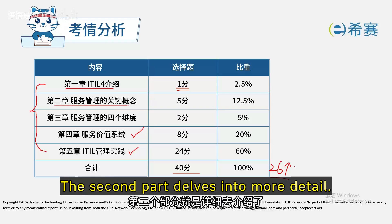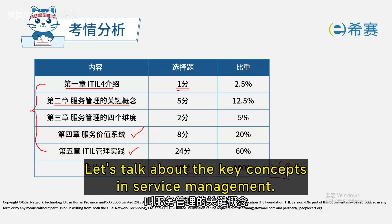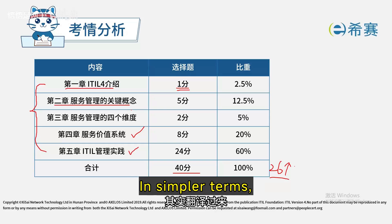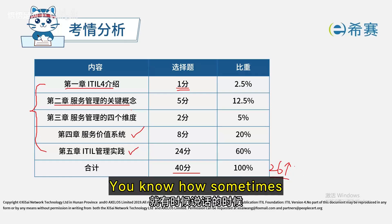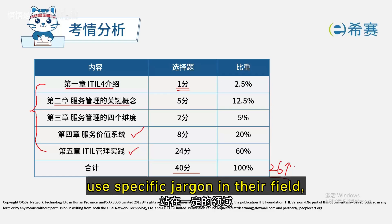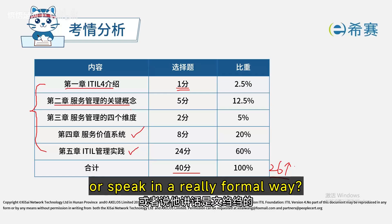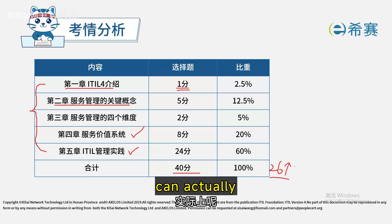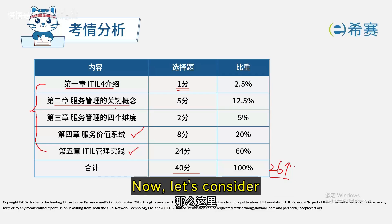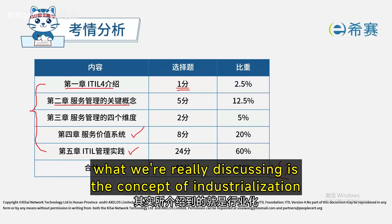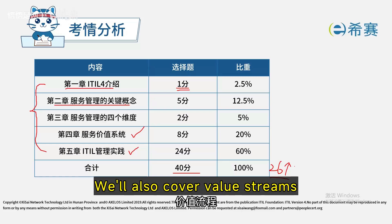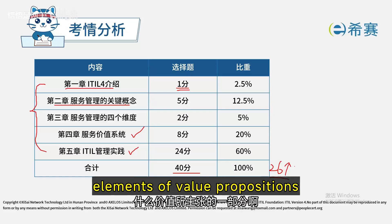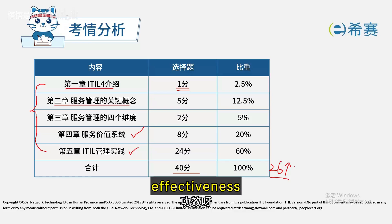Moving on to the second part, we'll dive into a detailed explanation of key concepts in service management. These key concepts are basically just fancy definitions — industry lingo. Experts in the field use high-sounding language, but there's always a simpler way. We're talking about industry standards like service management, service relationships, the value chain, value streams, processes, costs, and concepts like effectiveness and usefulness.